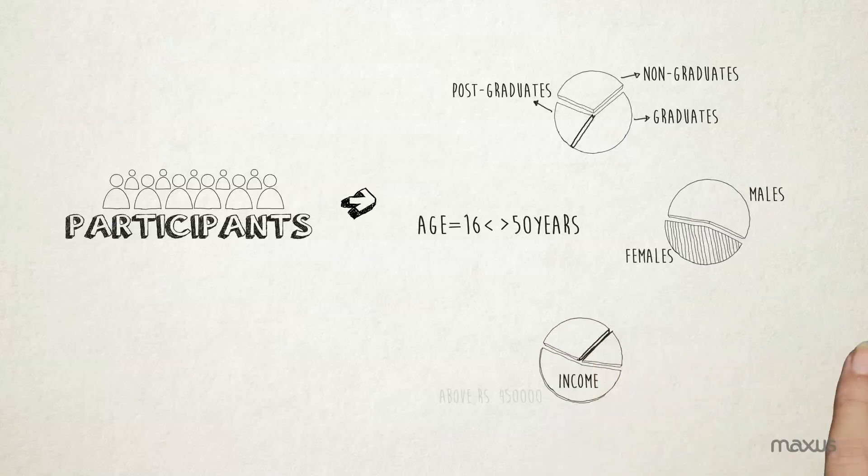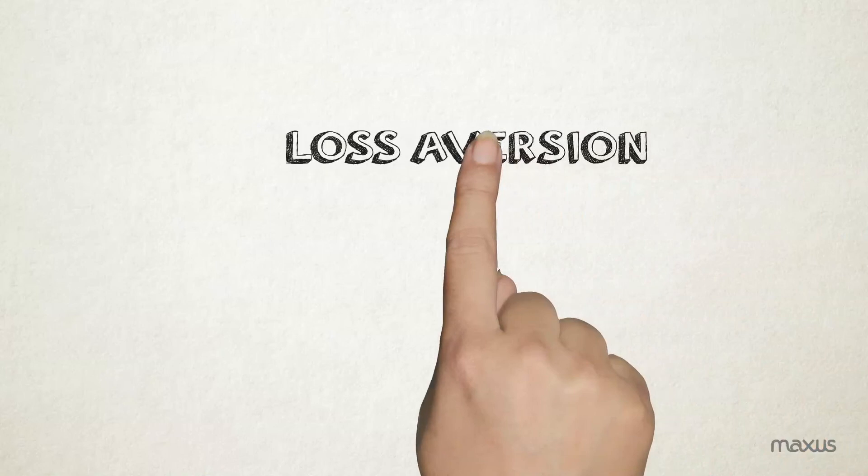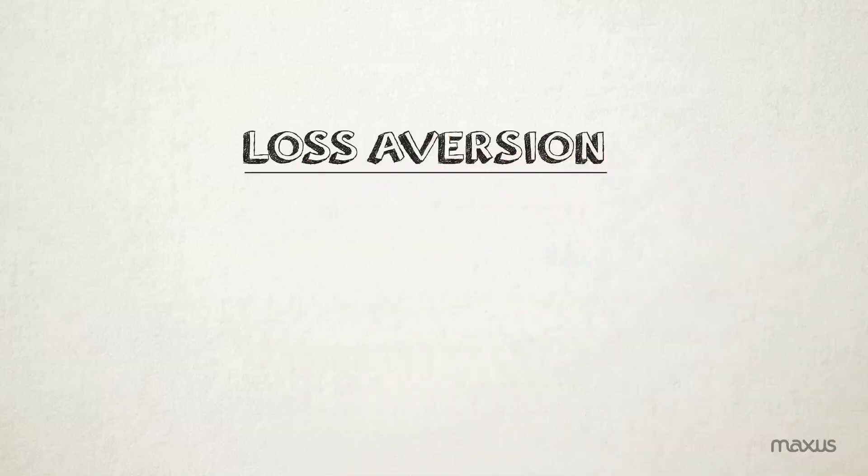50% had income above Rs. 4,50,000, 23% had income between Rs. 50,000 to Rs. 1,00,000 and 11% with annual income above Rs. 1,50,000 to Rs. 3,00,000. The experiment clearly showed the population exhibit loss aversion.